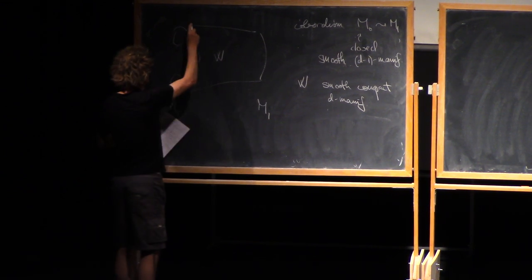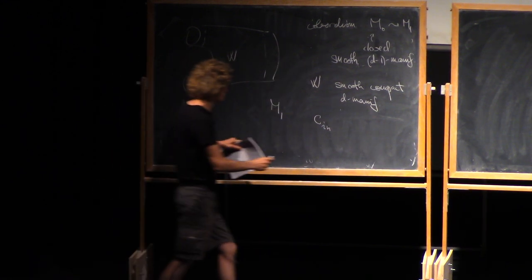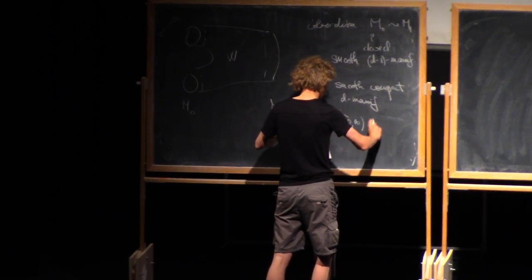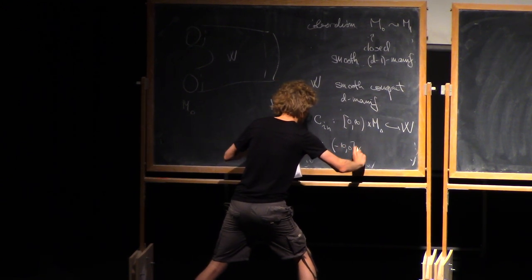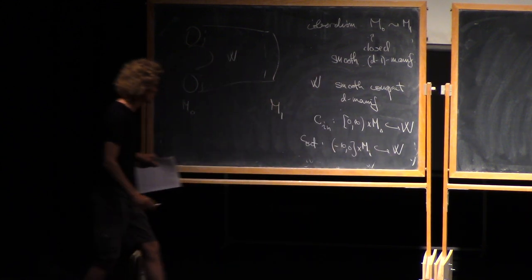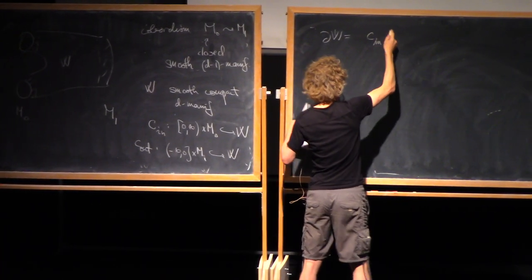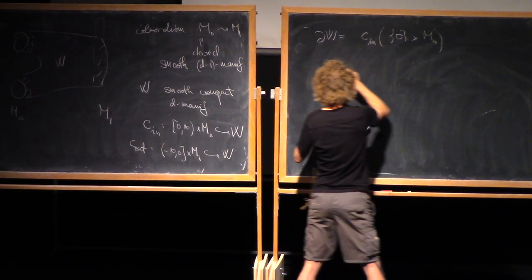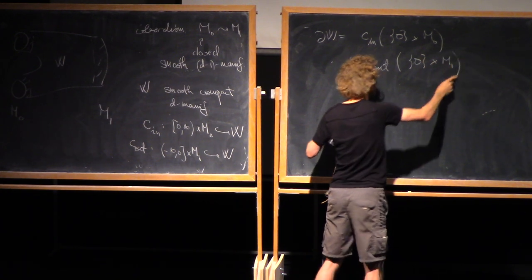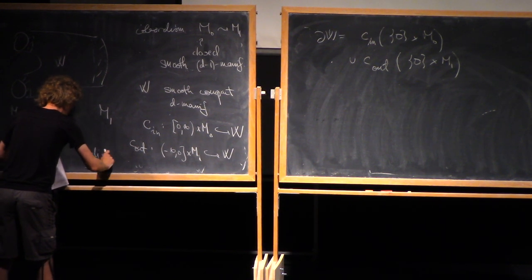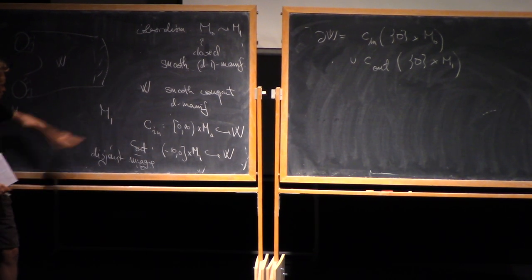For technical reasons, it's better to have a little collar around the boundaries. So let's write C in for the incoming collar - so zero to infinity cross M0 into W. And C out for the outgoing boundary. So two smooth embeddings with the property that the boundary of W is C in union C out, and these should have disjoint image. So the official definition is these three pieces of data.